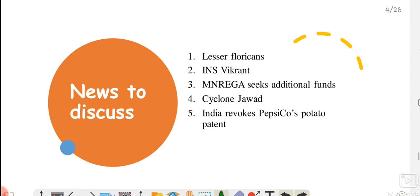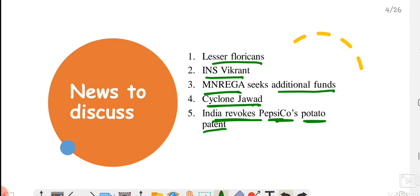First, we'll talk about lesser floricans. Then we'll move on to INS Vikrant, that is an indigenous aircraft carrier of India. Then we'll move to MGNREGA and how the Centre has asked for additional funds. Then we'll talk about Cyclone Jawad, that has threatened the areas in Andhra Pradesh and Odisha. And finally, we'll talk about how India recently revoked PepsiCo's potato patent.